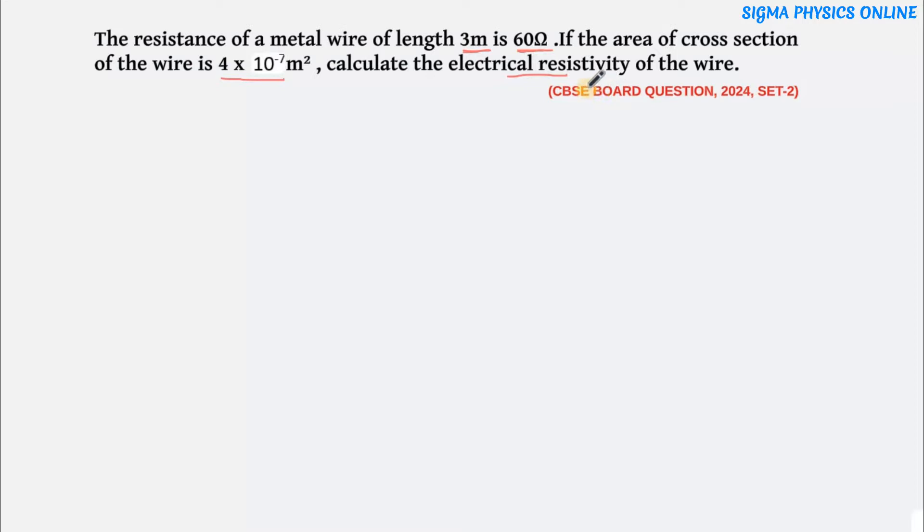First, let's write down what all are given and then we substitute it in the formula. The length of the wire is 3 meters. The resistance R is given as 60 ohms, and the area of cross section is given as 4 into 10 to the power minus 7 meter square. We need to find out the resistivity rho.